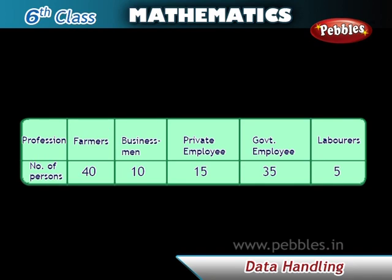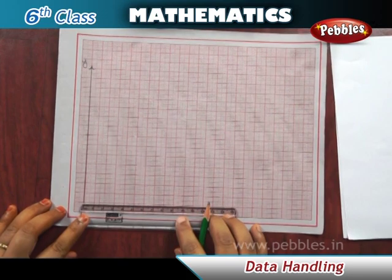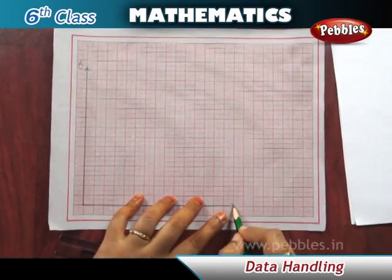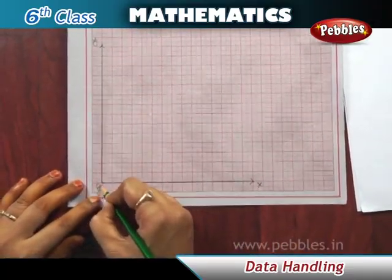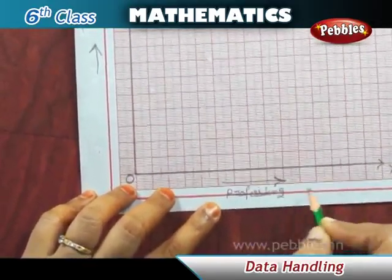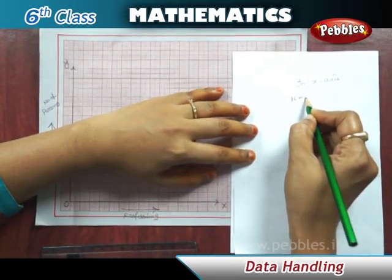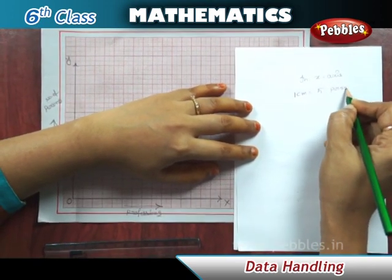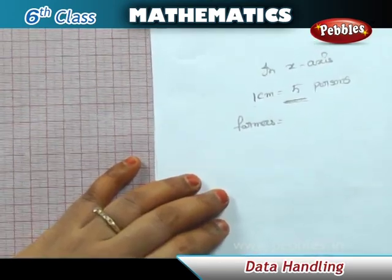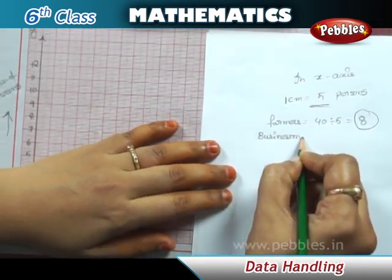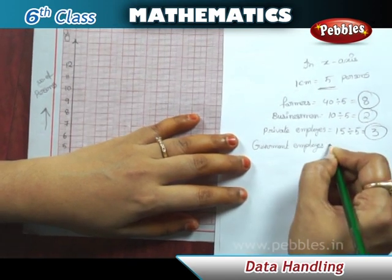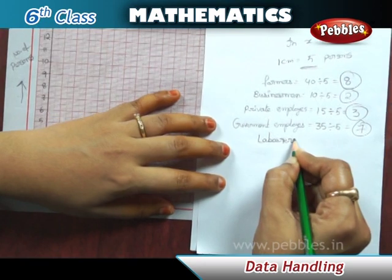To construct a vertical bar graph, follow these steps: First, draw two perpendicular lines — the horizontal line is the x-axis and the vertical line is the y-axis. Mark the number of people along the y-axis and the professions along the x-axis. Select a suitable scale, for example 1 cm = 5 persons. Then calculate bar heights by dividing frequencies by the scale: farmers 40÷5 = 8, businessmen 10÷5 = 2, private employees 15÷5 = 3, government employees 35÷5 = 7, laborers 5÷5 = 1.